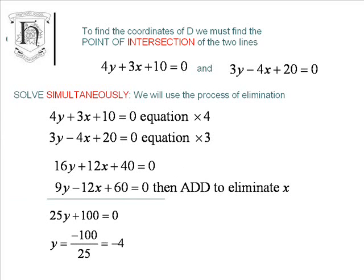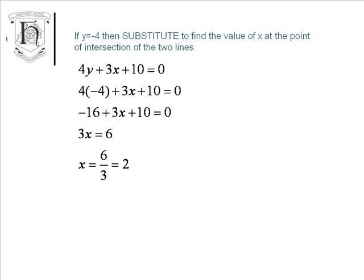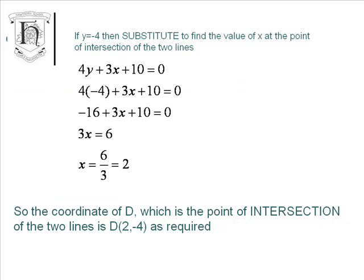25Y plus 100 equals 0, and so Y equals minus 4. We're now going to substitute this Y value into one of the equations, and that's going to allow us to find the X coordinate. So X equals 2. This is the point that we were told to show, and so D is the point (2, -4).